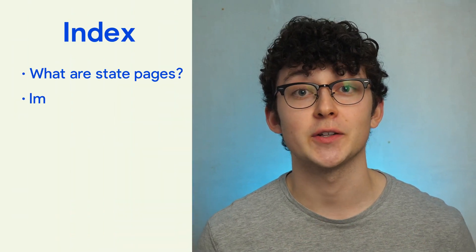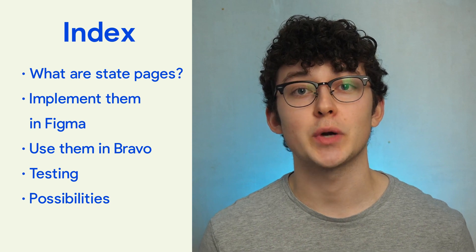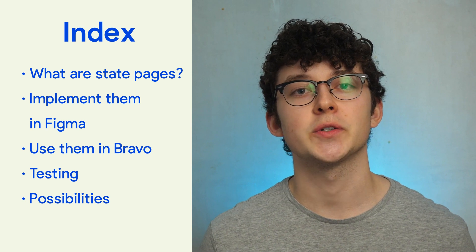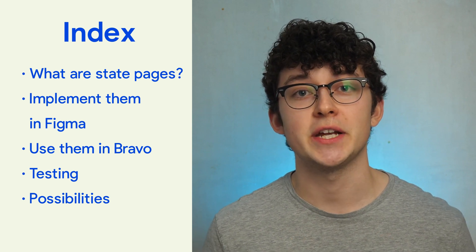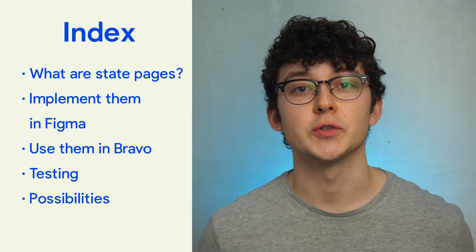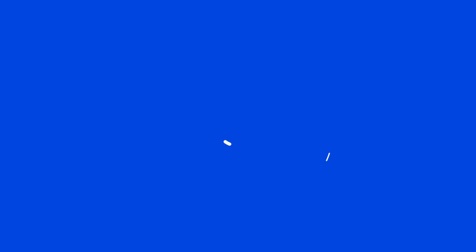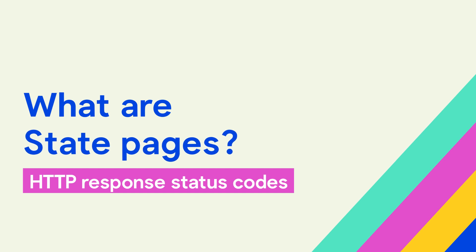I'm going to start off by explaining what state pages are, and for that we're going to have a look at APIs first. Next, we'll look at the actual Bravo tags we can insert into our Figma file, and after that we'll import that into Bravo. Because it can be tricky to see if the state pages are working correctly, this video has its own test section, and we'll finish off by looking at some sample use cases to give you some inspiration.